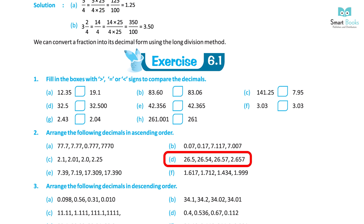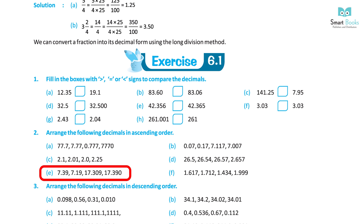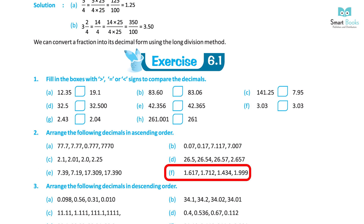Ascending order solutions continued. D. 2.657, 26.5, 26.54, 26.57 — Solution: 2.657, 26.5, 26.54, 26.57. E. 7.39, 7.19, 17.309, 17.390 — Solution: 7.19, 7.39, 17.309, 17.390. F. 1.617, 1.712, 1.434, 1.999 — Solution: 1.434, 1.617, 1.712, 1.999.